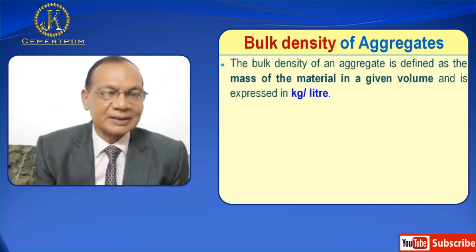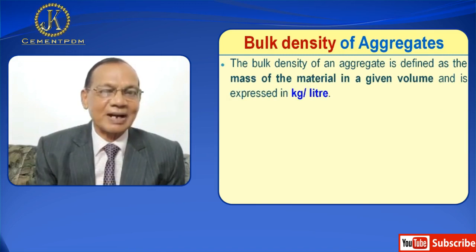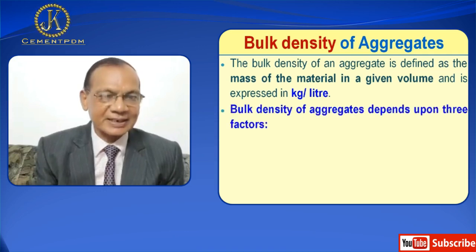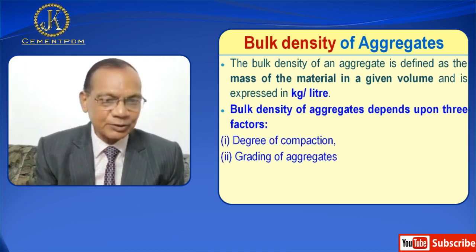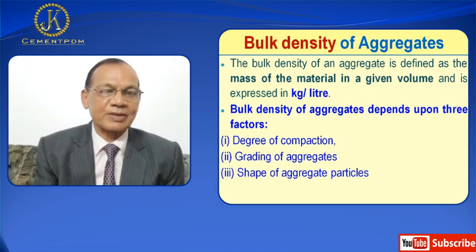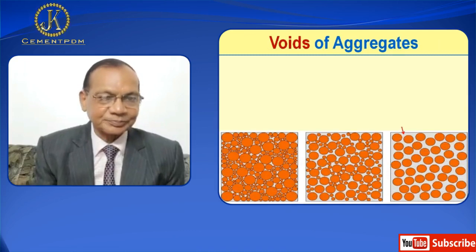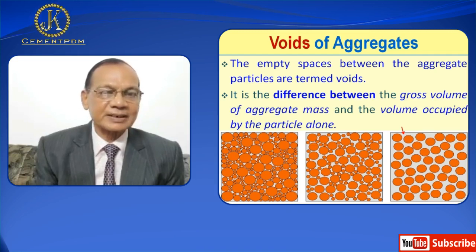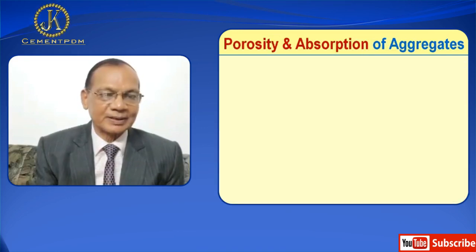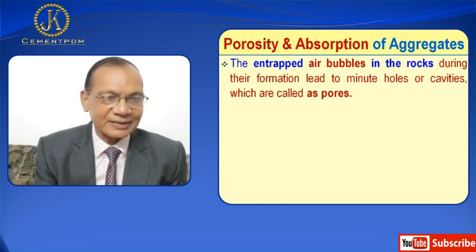Bulk density: the bulk density of an aggregate is defined as the mass of the material in a given volume and is expressed in kg per cubic meter. Bulk density of aggregates depends upon three factors: number one degree of compaction, number two grading of aggregate, and number three shape of aggregate particles. The empty spaces between the aggregate particles are termed voids. It is the difference between the gross volume of aggregate mass and the volume occupied by the particles.